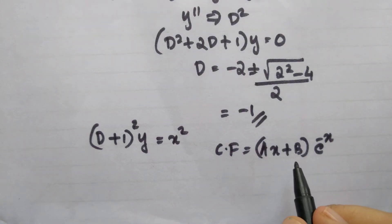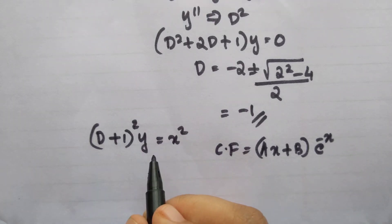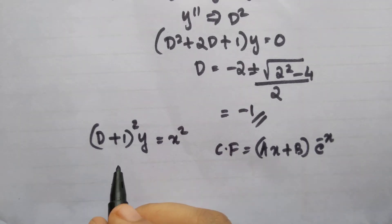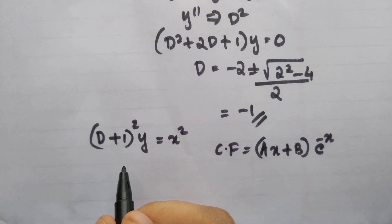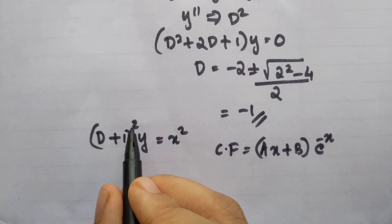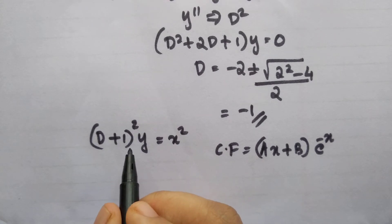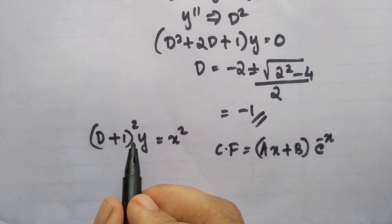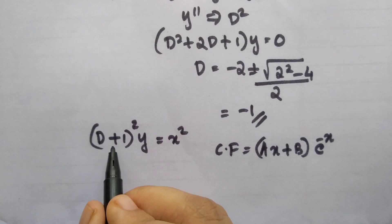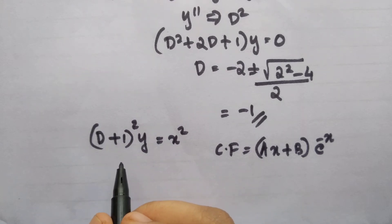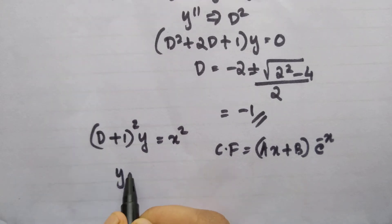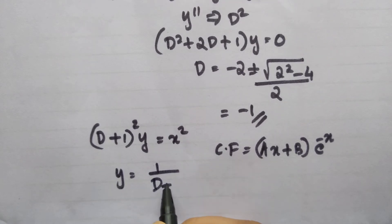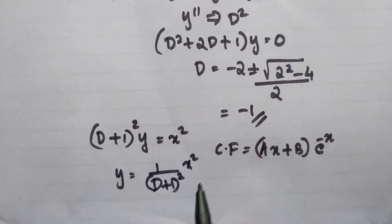Now to find the particular integral, we use the D-operator method. We put the y term on the LHS and take all other terms from LHS to RHS. So this becomes y equals 1 by D plus 1 all square into x square.